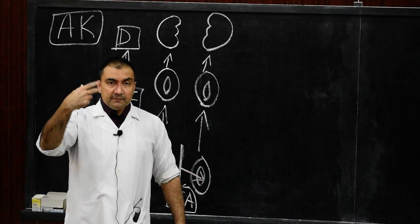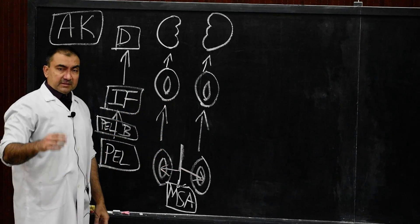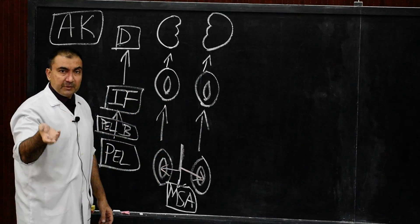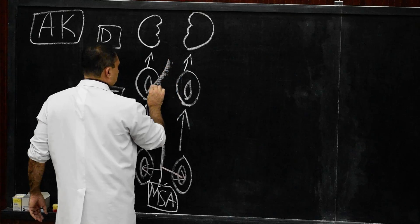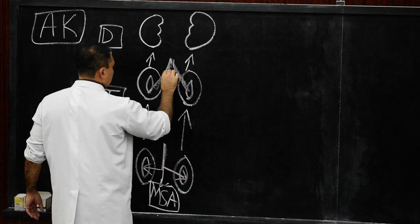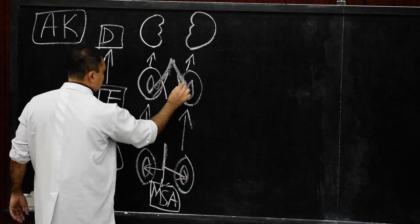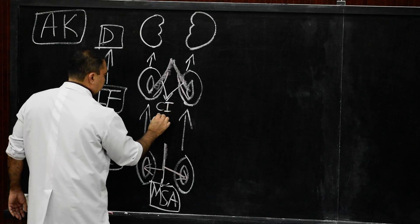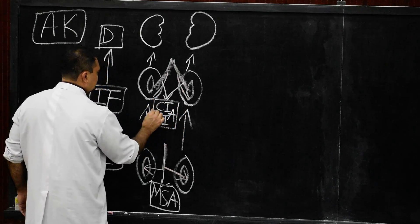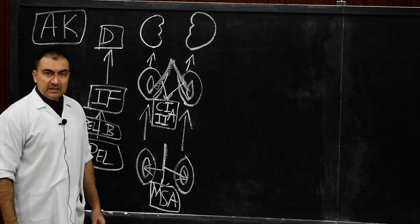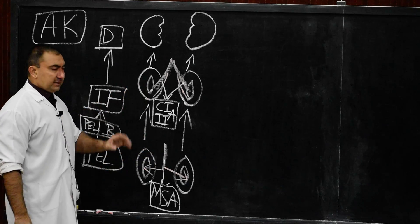Stage two: as the kidneys ascend into the iliac fossa, the blood supply received by the kidneys is from the common iliac and internal iliac arteries. Both the common iliac as well as the internal iliac arteries supply the kidneys when they are in the iliac fossa.